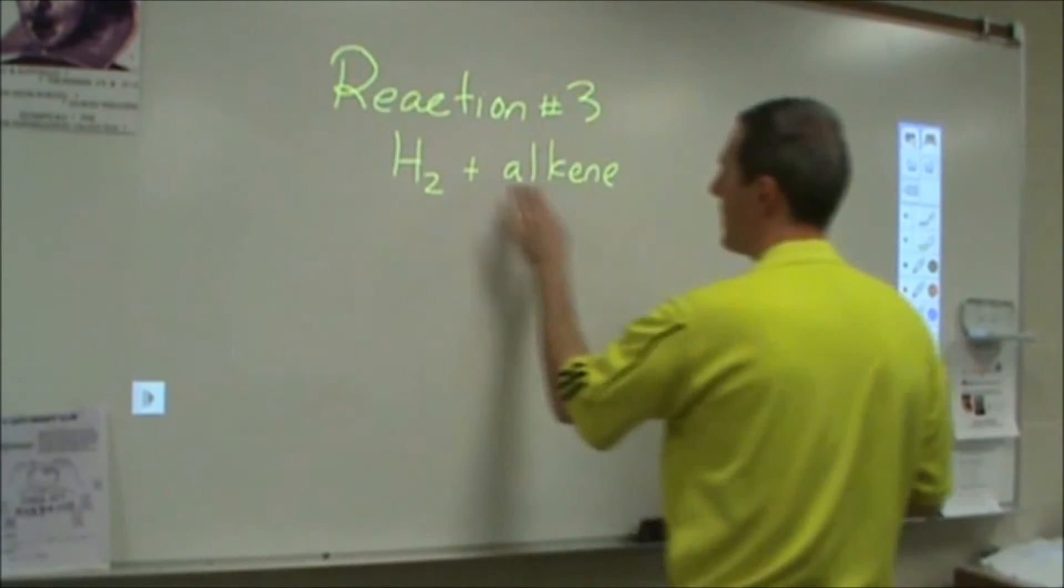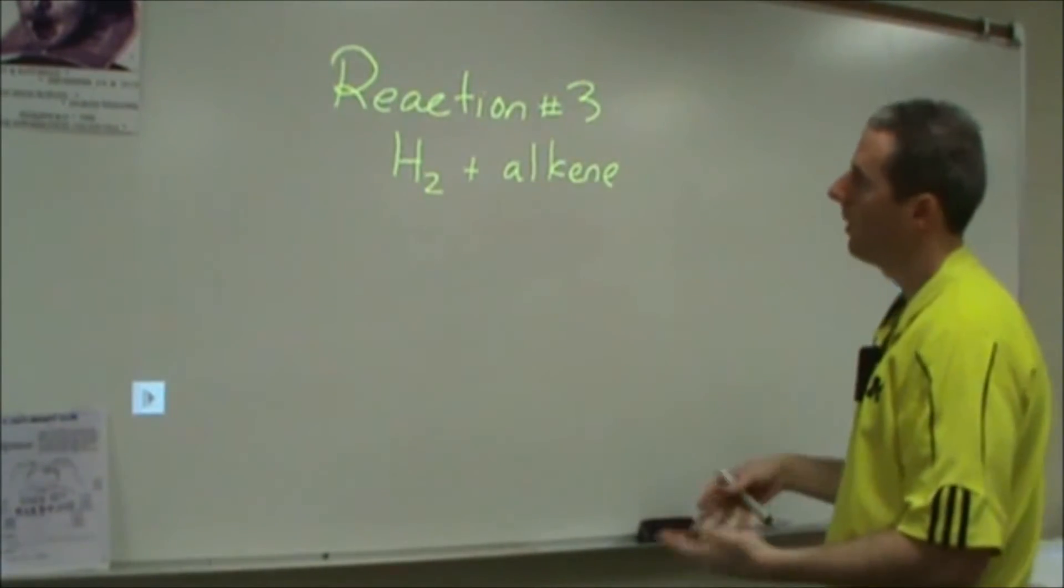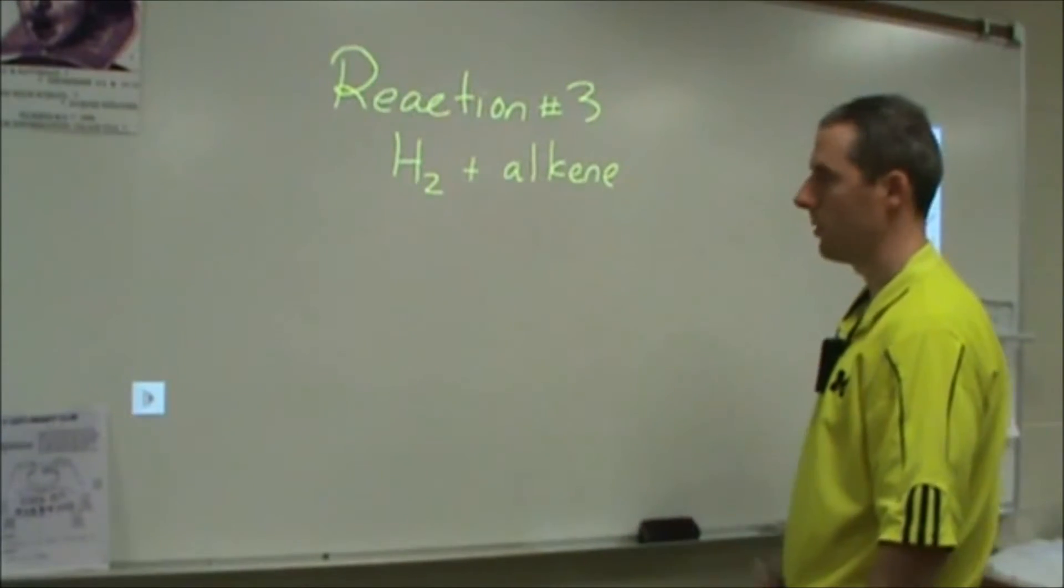So reaction number three, we're going to take hydrogen gas, react it with an alkene, and that's going to turn this into an alkane. It could be a cyclic alkene, which would turn into a cycloalkane.